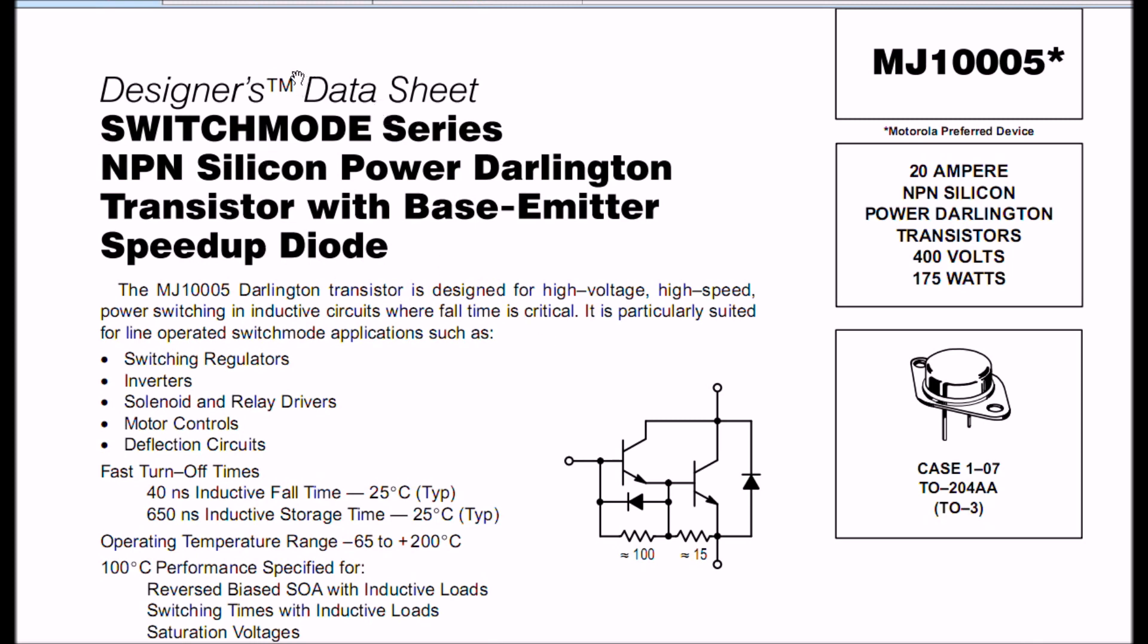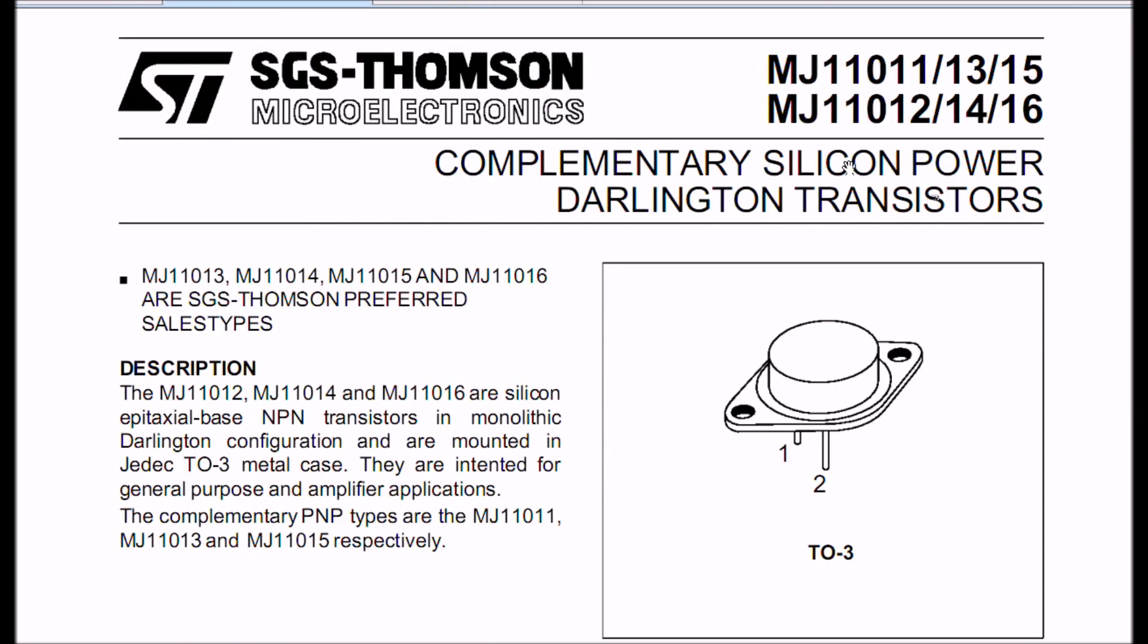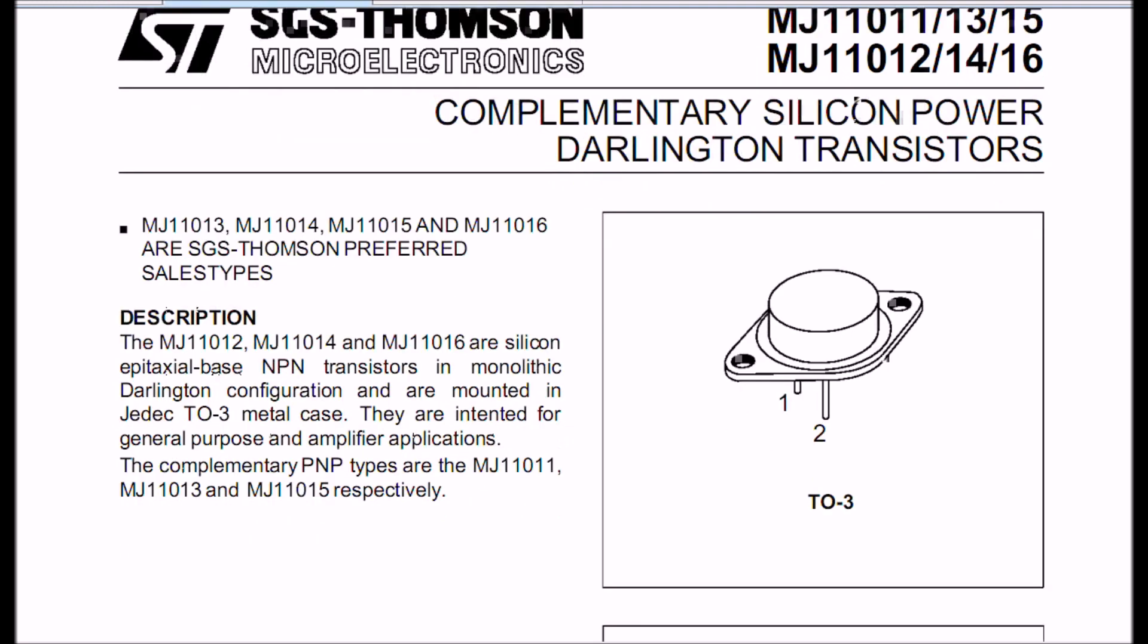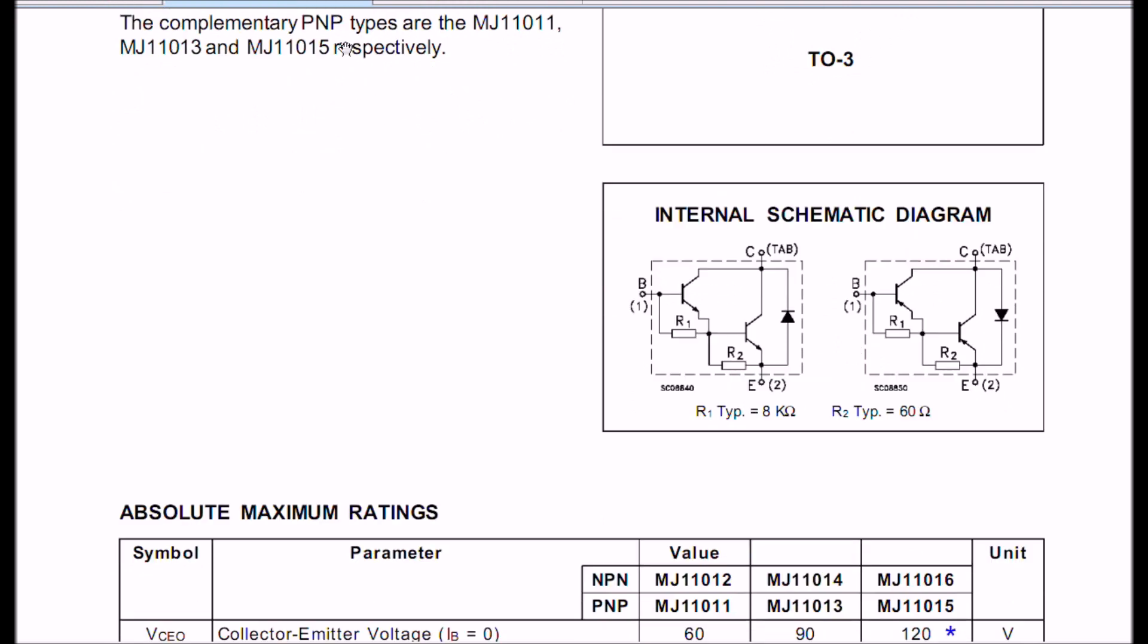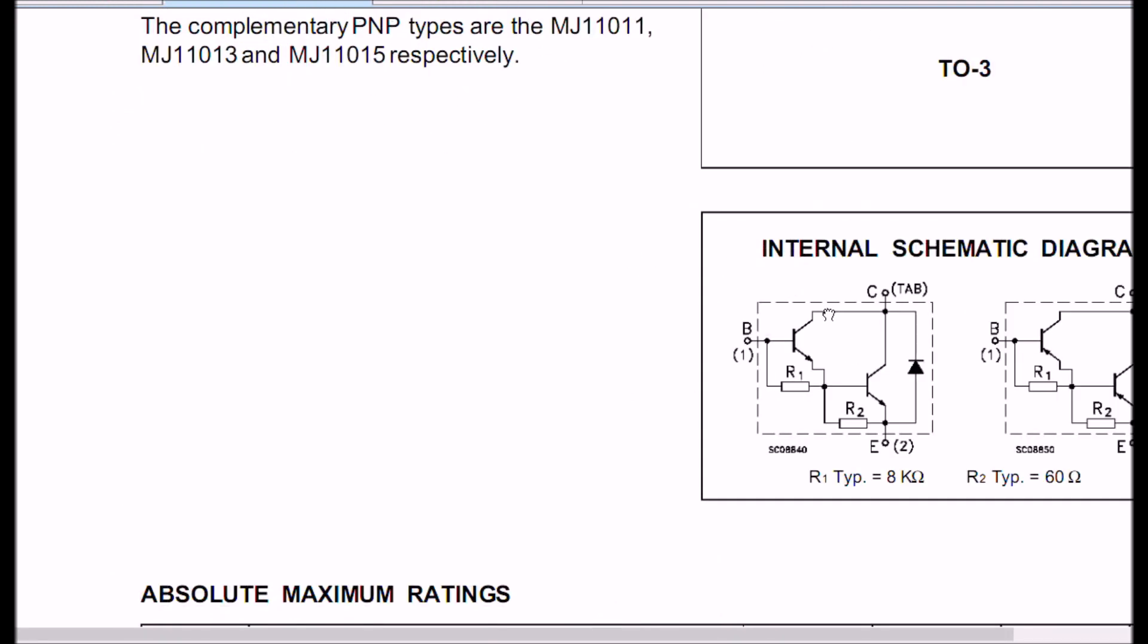Compare this with the MJ-11000 series. These are also the same TO3 cases, similar, but not as high current capabilities. But, these come in both PNP and NPN types. These are intended for general purpose and amplifier applications. You can use these probably in an audio amplifier. How are they different? Let's look.